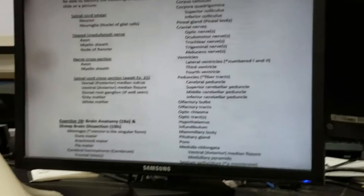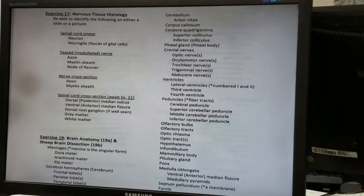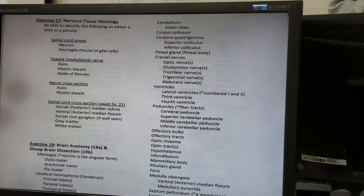But the rest of this, you should be able to identify on the brain model. A lot of the brain models will pull apart in half. You can see the corpus callosum, the fornix, and things like that. You can pull it apart and see the parts inside. When we get to the test in March, I'll have both brain models and sheep brains on it. Both will be on it.